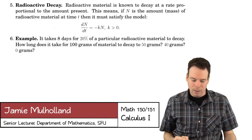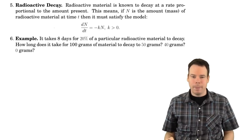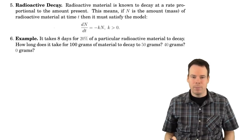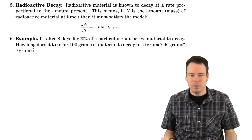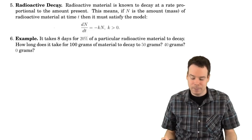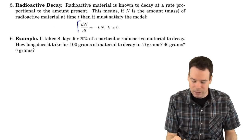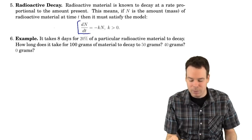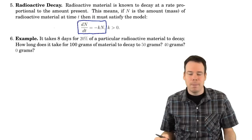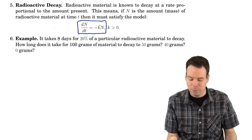Let's look at another example. In this case we're going to look at radioactive decay. We have a piece of radioactive material, and what's known about radioactive material is that it decays at a rate proportional to the amount present. So if n is the amount of radioactive material, then the derivative of it should be some multiple of n — some multiple of the amount present. It's proportional to the amount present, so that's a constant of proportionality.